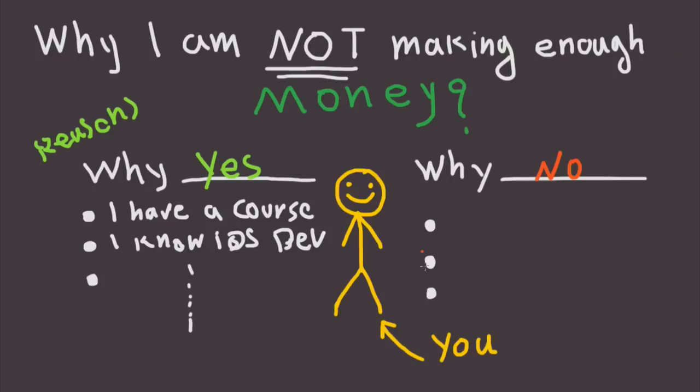On the other side, you should write why you're not getting paid for these reasons or what are the reasons people are not paying you. Maybe one reason is you don't have a particular skill needed to make money. For example, I have a course but I'm not getting enough traffic. So not enough traffic could be one reason why you're not getting paid.